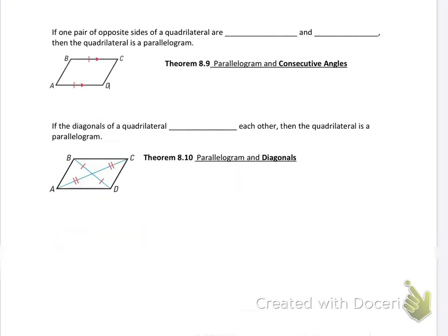Let's go on to the next part of the notes. Theorem 8.9: If one pair of opposite sides of a quadrilateral are congruent and parallel, then the quadrilateral is a parallelogram. One pair is congruent and parallel. I don't have any information about the other pair.